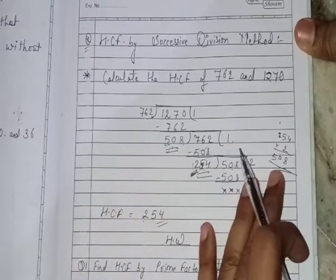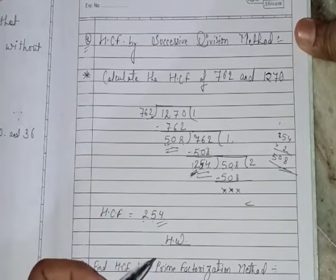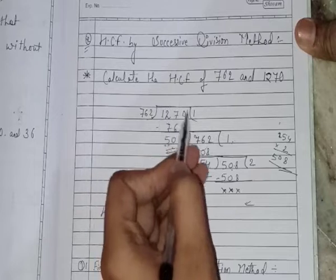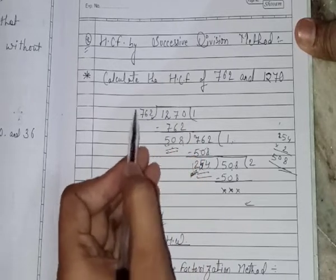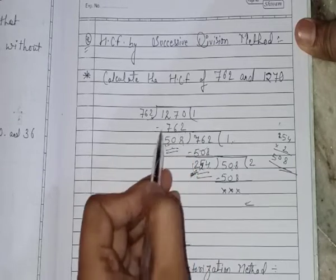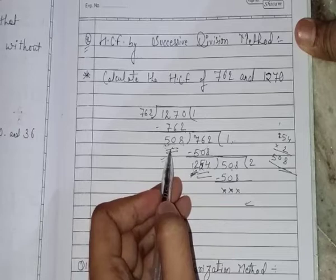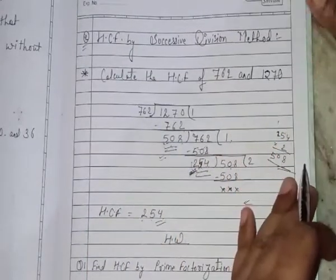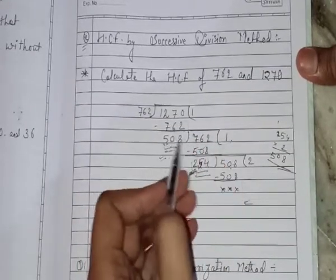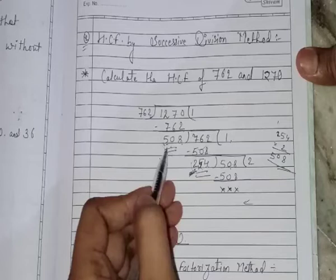We will do the question in just a few steps. First divide the bigger number. We will divide the bigger number by the smaller number first. So it will go in one time, that 762 won the 762. The first remainder will be 508. Now this first remainder is 508. The remainder you get, which is the first remainder, the first divisor will be divided by this first remainder now.